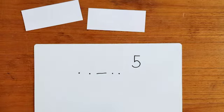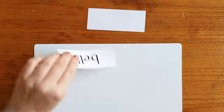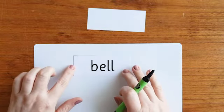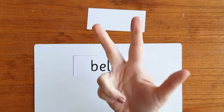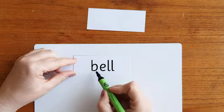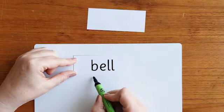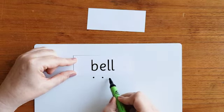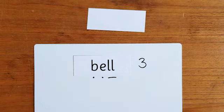Let's try another one. Remember, you're spotting if there are only two letters making one sound. Next word is bell. Let's say the rhyme. Count the graphemes, one, two, three — how many sound buttons can you see? That's right. In the word bell, there are two letters making one sound there. So it is one, two, three. There are three sound buttons in the word bell: B-E-LL.